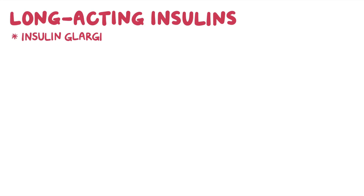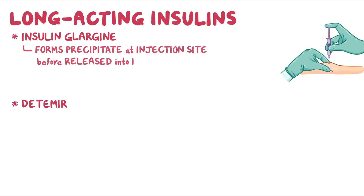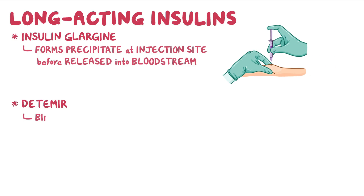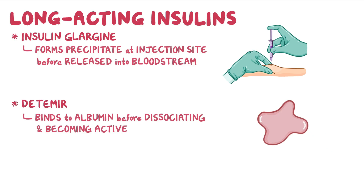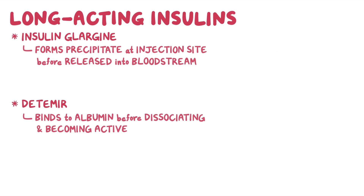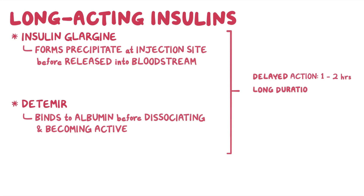Long-acting insulins include insulin glargine and detemir. Once administered, glargine forms a precipitate at the injection site before being slowly released into the bloodstream, while detemir binds to albumin in the blood before dissociating and becoming active. This accounts for their delayed onset of action between 1 to 2 hours, and these medications do not have a peak effect. Detemir typically lasts around 20 hours.